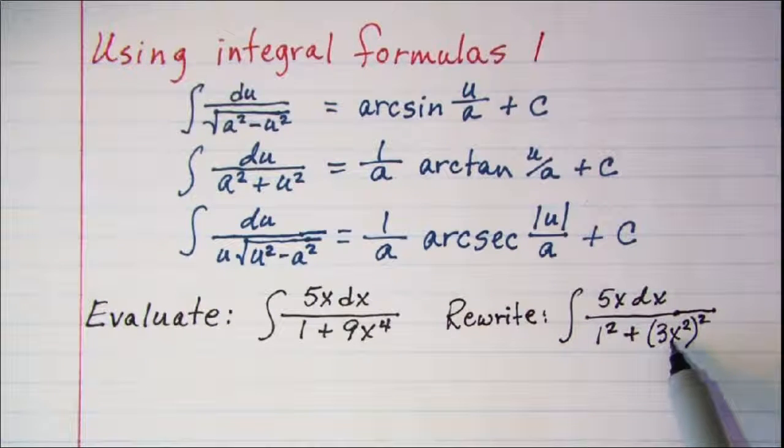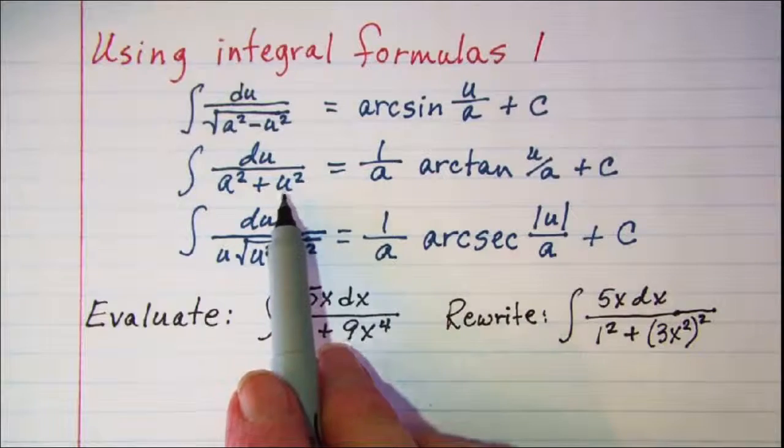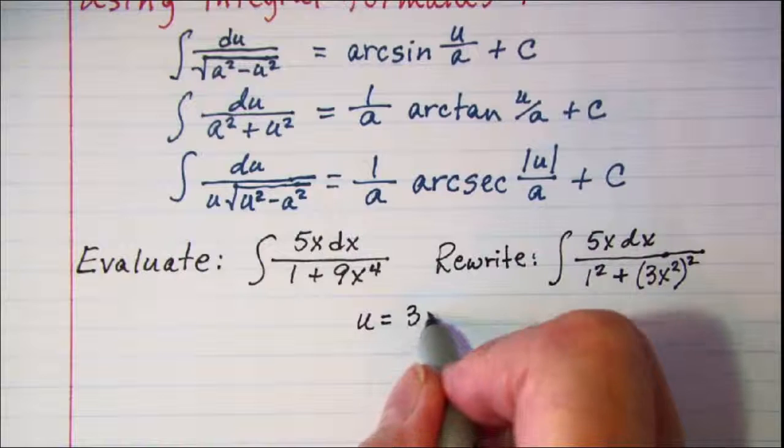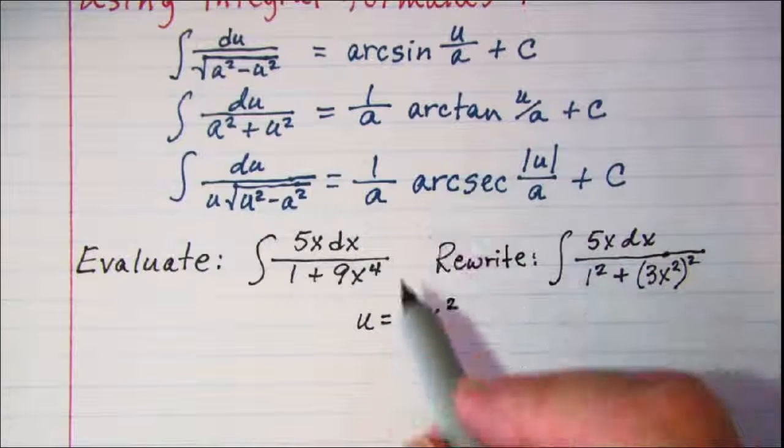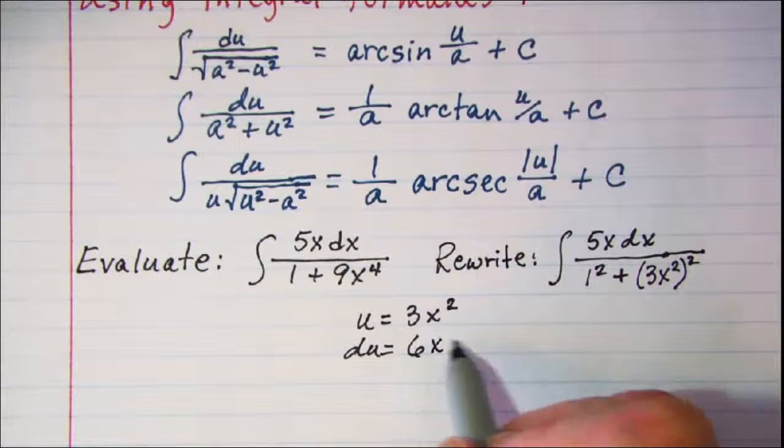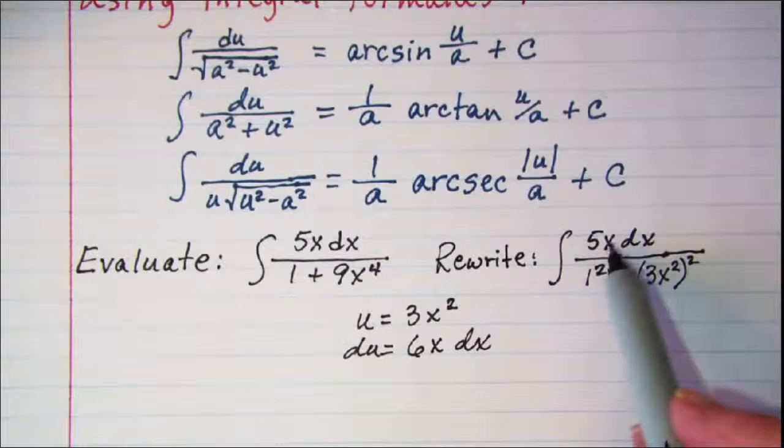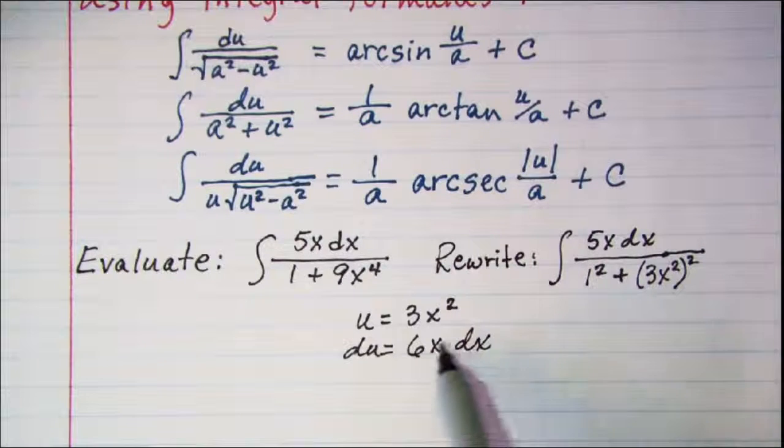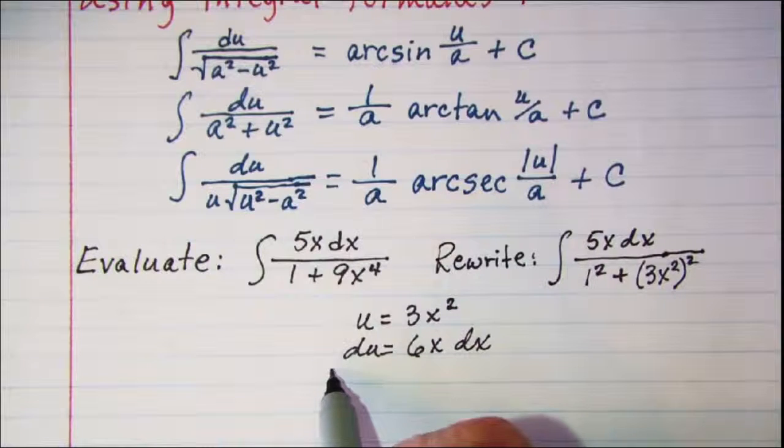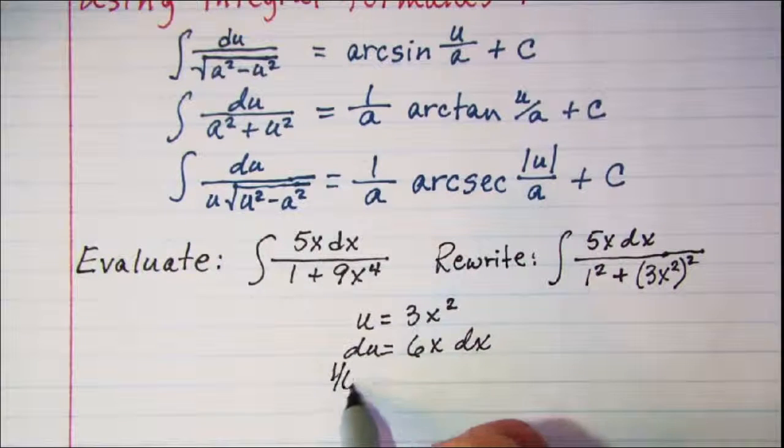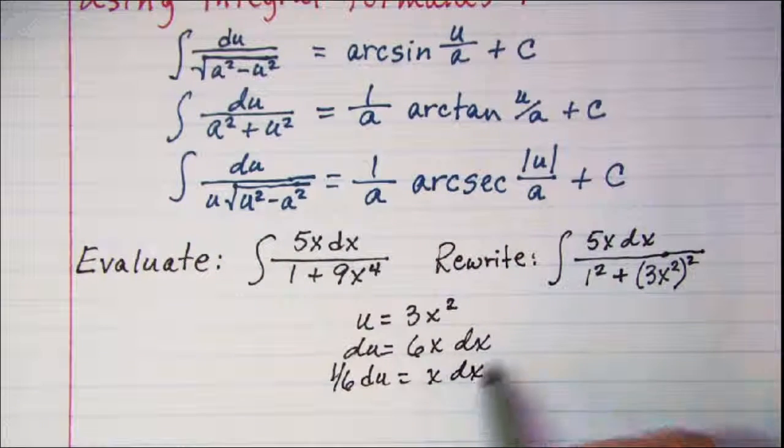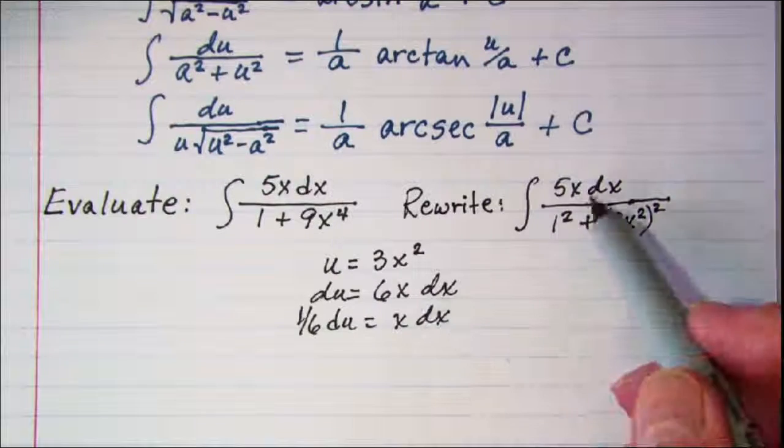Now if we let 3x squared be u, then du is equal to 6xdx. Well I have an xdx, so let me divide both sides by 6, or multiply by 1 sixth. So I have 1 sixth du is equal to xdx.